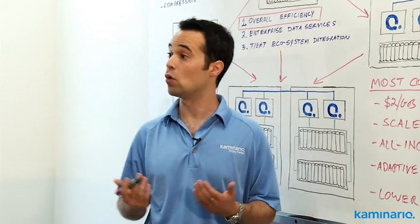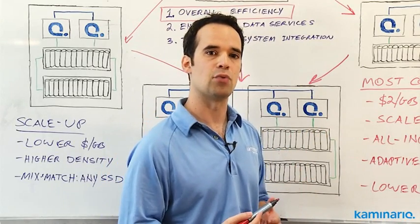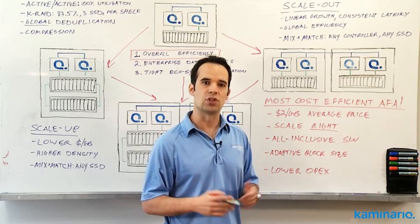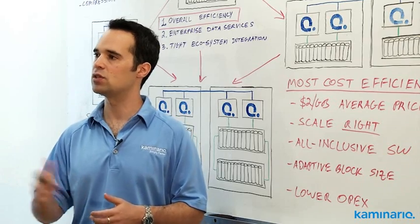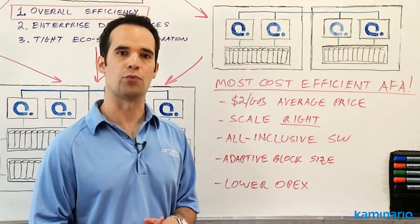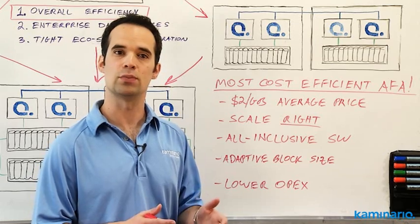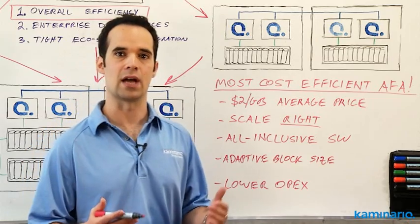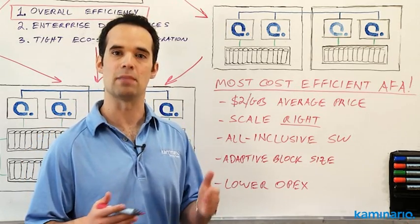So how did we become the most cost efficient all-flash array? We built an architecture that allows us to bring down the price to an average of $2 a gig. The scale-right approach that combines both scale-up and scale-out and gives the right solution for the customer without overcharging him. All-inclusive software pricing with no extra charge for software features such as deduplication, compression, snapshots, and more.